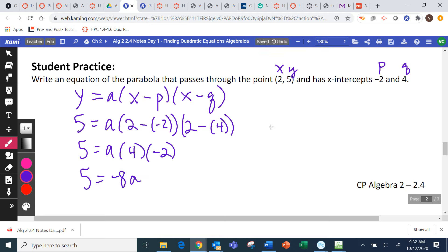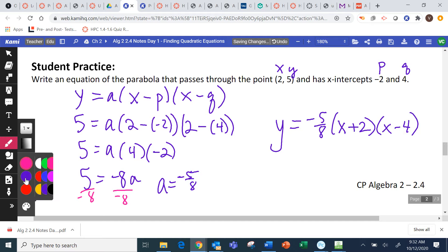Okay, when I did 2 minus negative 2, that became plus. So, I got 4. And then 2 minus 4 got me negative 2. So, I have negative 8A. Divide both sides by negative 8. And I get that A is negative 5 eighths. So, I write our equation. y equals our A value, negative 5 eighths, times x plus 2, times x minus 4. I just put in my p and my q again.